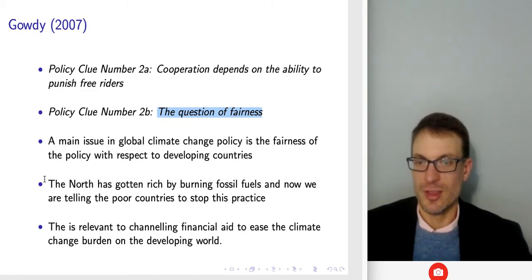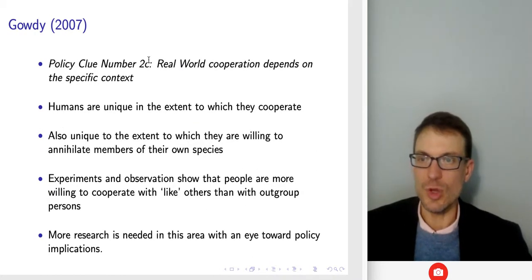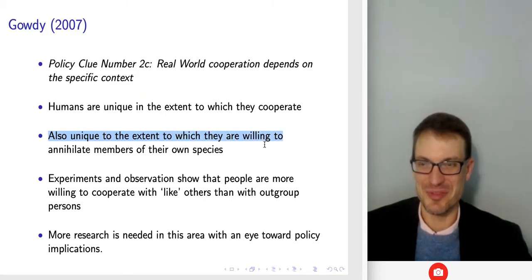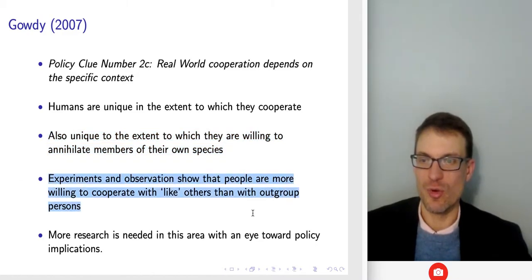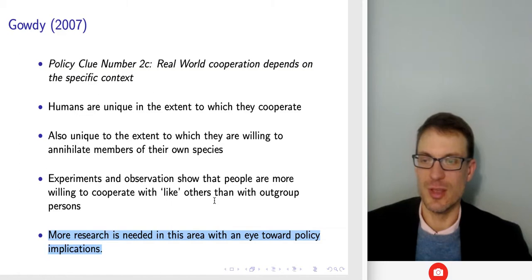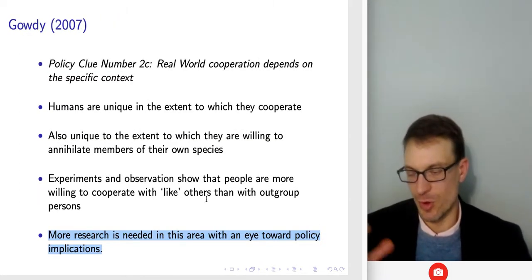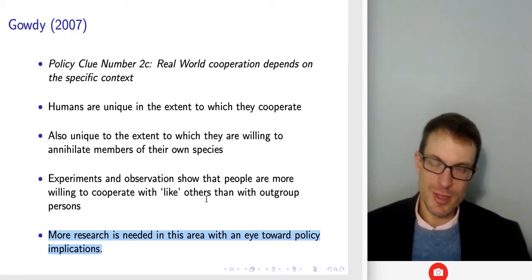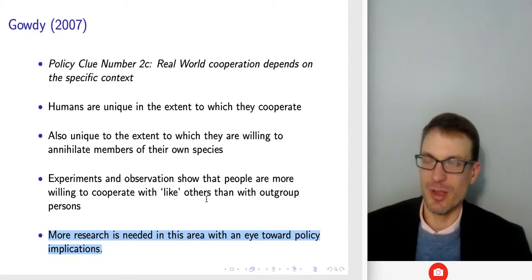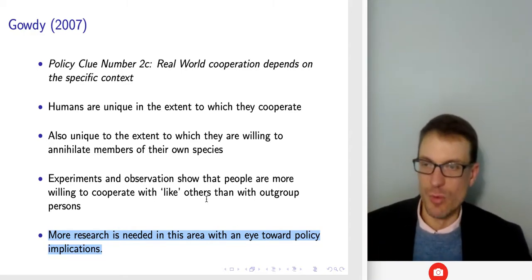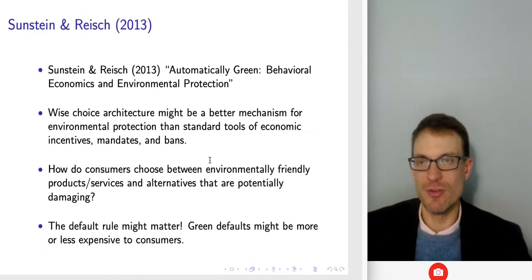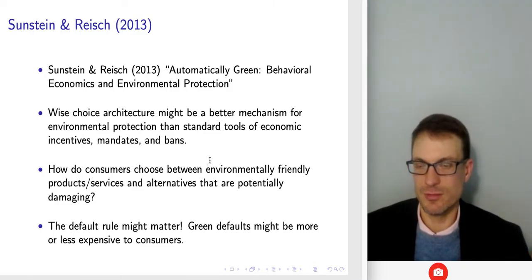Free riding is one of the main things that undermines cooperation because it diminishes the incentives for those who otherwise would be cooperating to continue cooperating. Real world cooperation depends on the specific context. Humans are unique in the extent to which they cooperate, but also unique in the extent to which they're willing to annihilate members of their own species. My point in mentioning this paper is just to bring us to the doorstep of saying behavioral economics might be useful in approaching this particular problem — and actually any sort of collective action problem involving large numbers of humans.